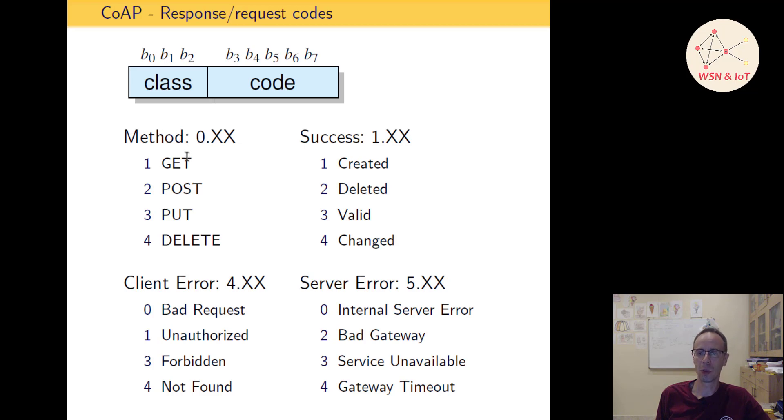For example, if we send a request and sending the status code zero, then with a one can be a GET request, or two can be a POST request, three a PUT request, and so on. And as response we can get the status class success with a one, followed from one of these codes depending on what's happened.